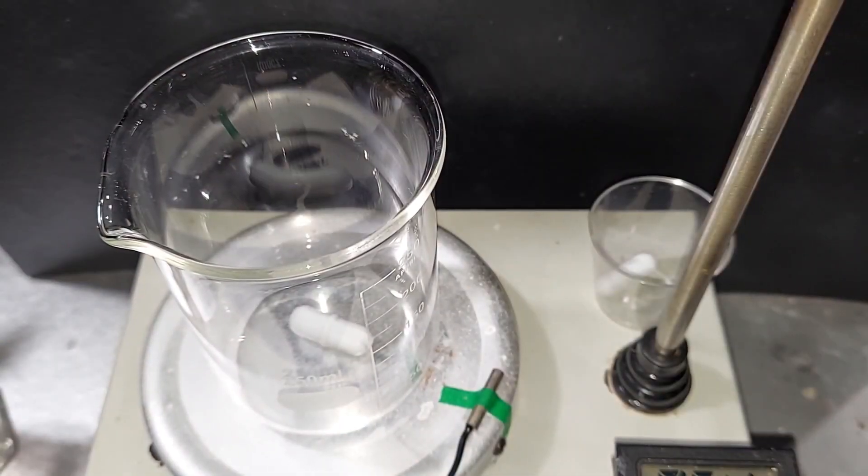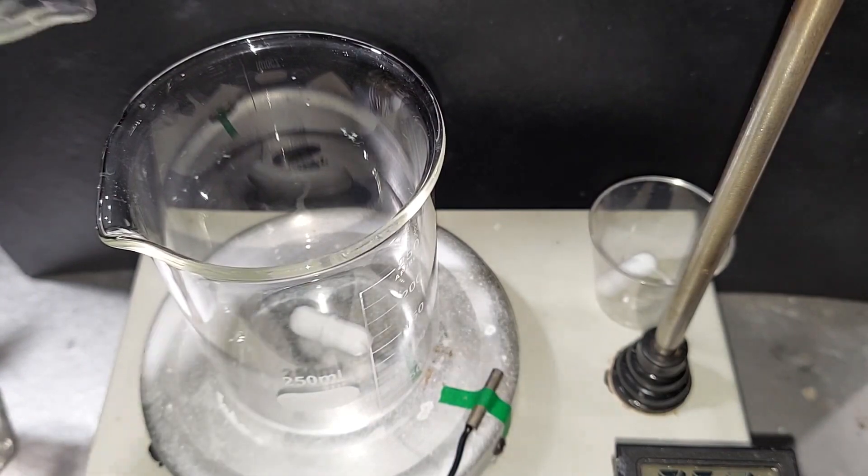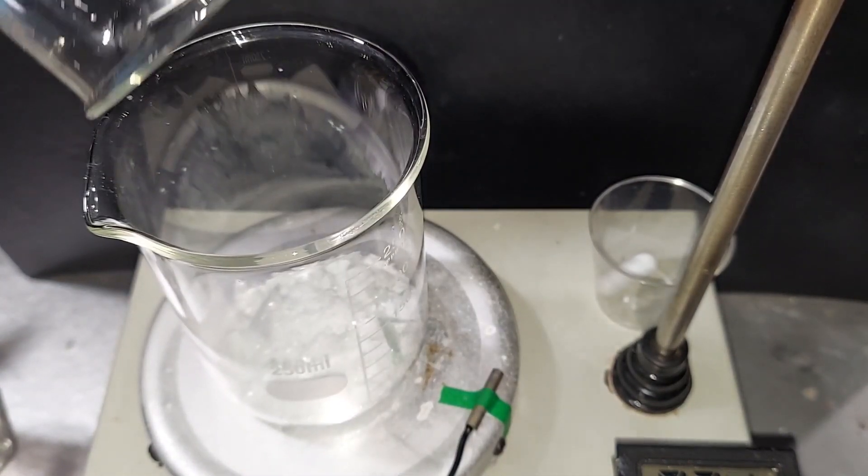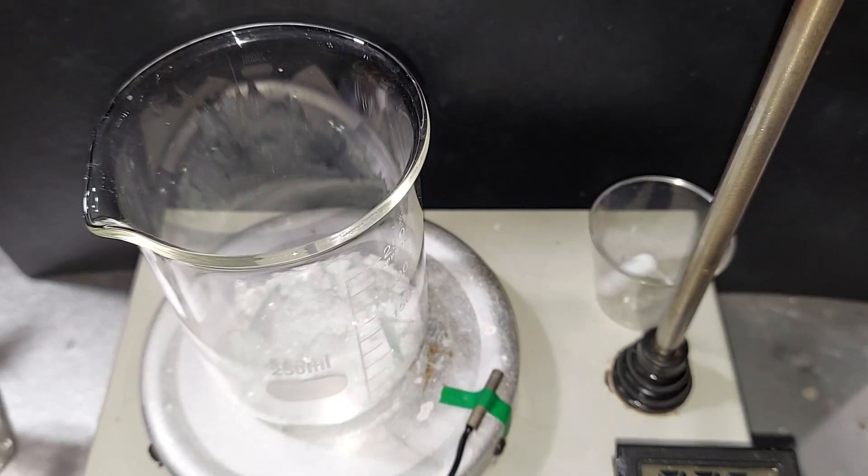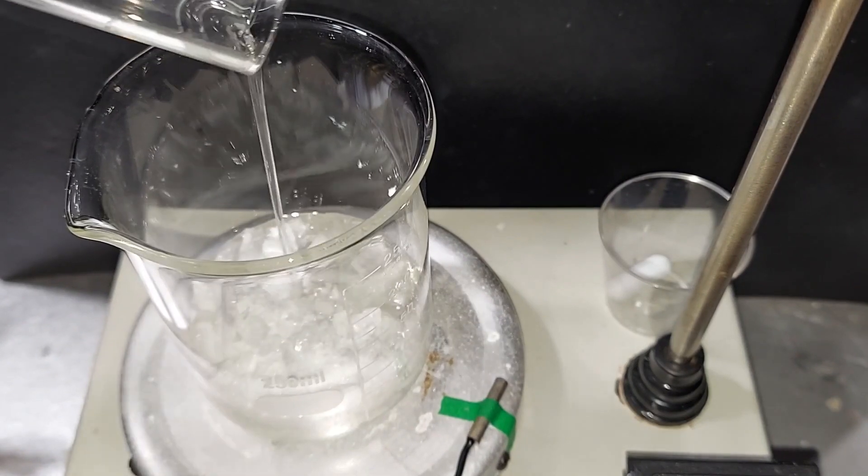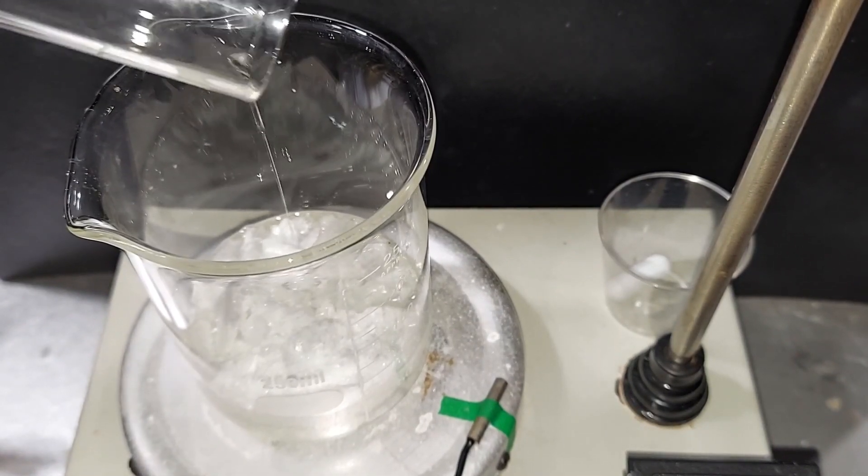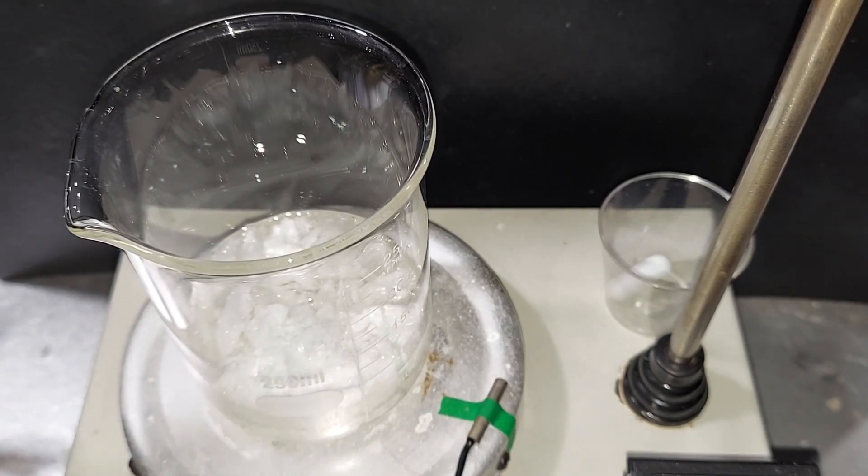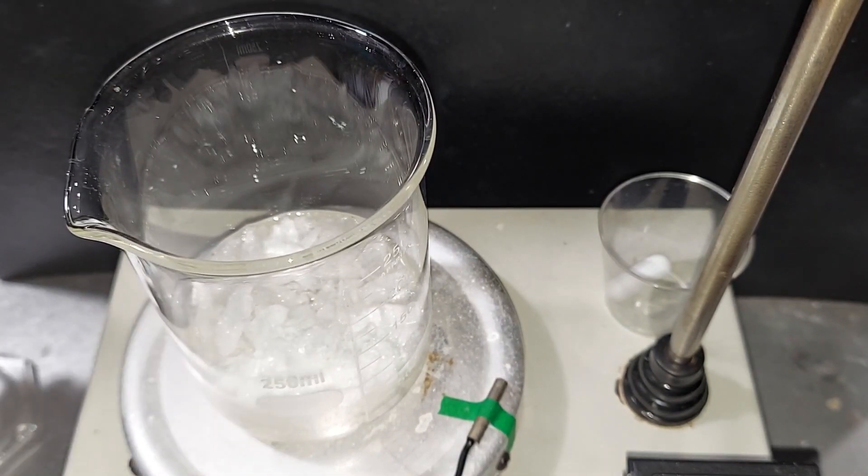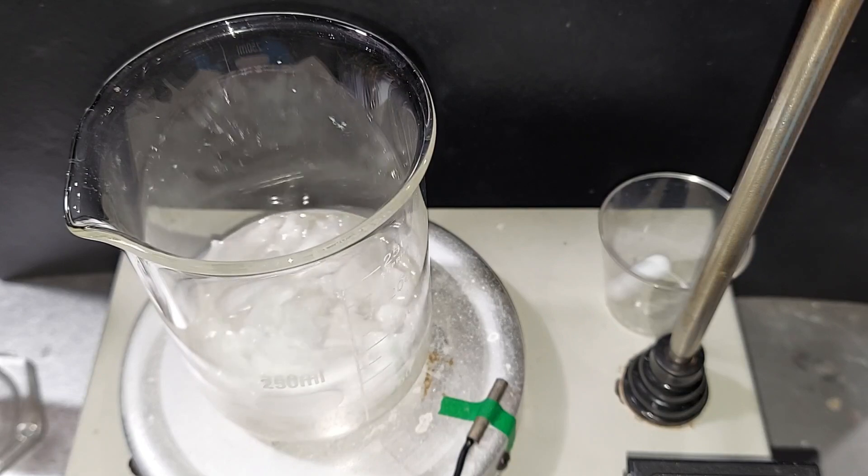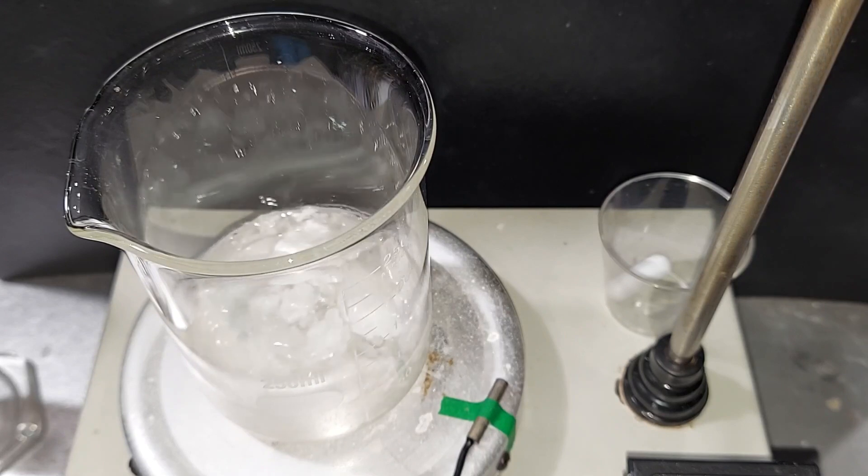Our final yield is 14.59 grams. Now that we have our pure acetylsalicylic acid, I'm going to dump it into this 250 milliliter beaker and then add our 60 milliliters of sulfuric acid. We're going to heat this to 120 degrees Celsius and keep it there for probably an hour. Be back when it's done.